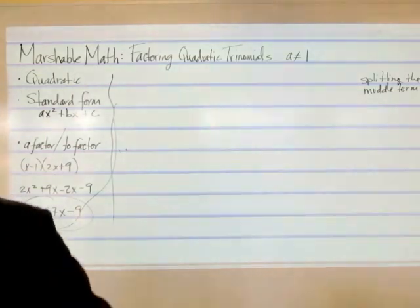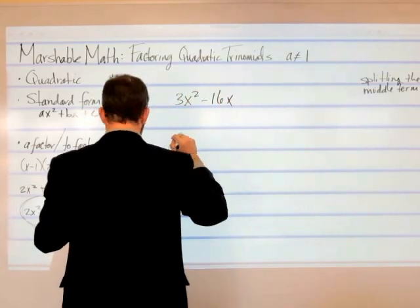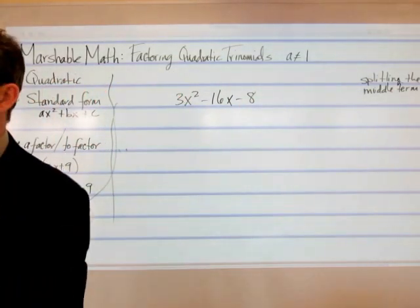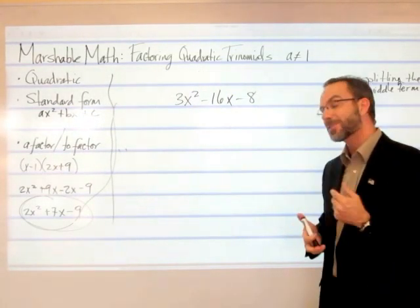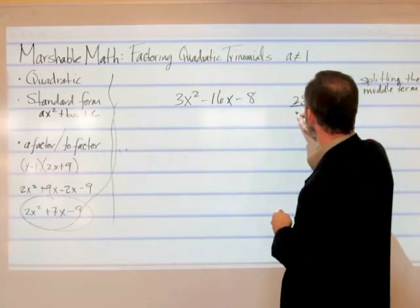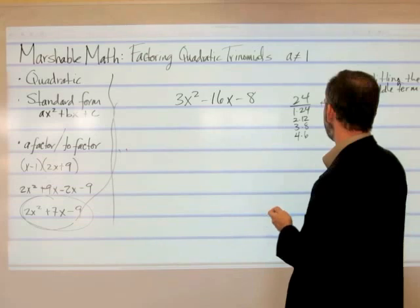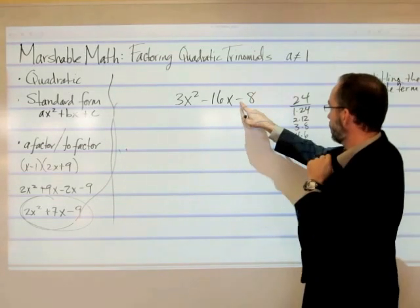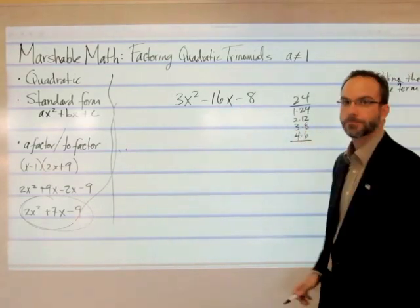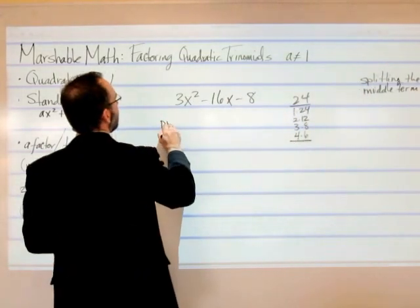Let's try another one: 3x squared minus 16x minus 8. Press pause and take your hand at that. 3 times 8 is 24. Factors of 24: 1 and 24, 2 and 12, 3 and 8, 4 and 6, 5 doesn't work, and 6 we've already got so we're done. Which pairs, when you subtract them — because we're dealing with a minus sign for c — give you 16? None of them. So what happens when you find none that work? It's prime. Cannot be factored.